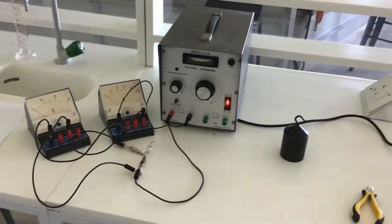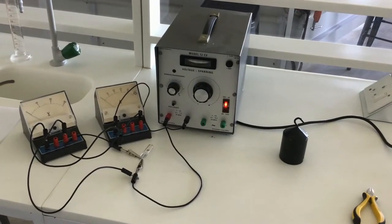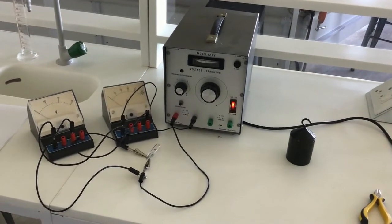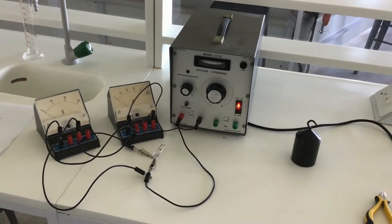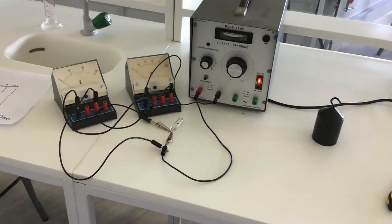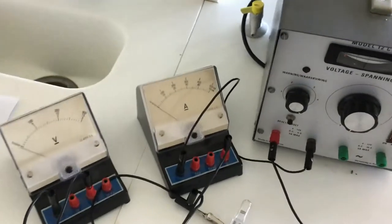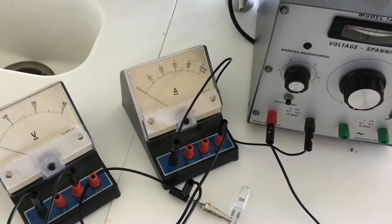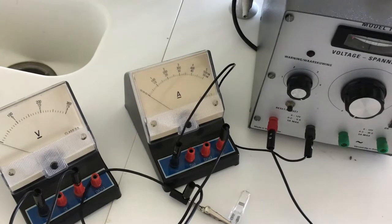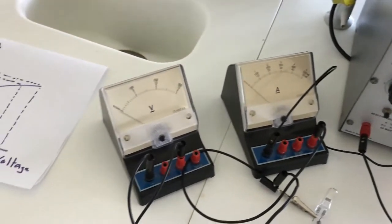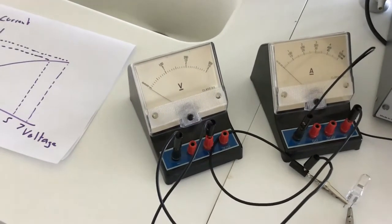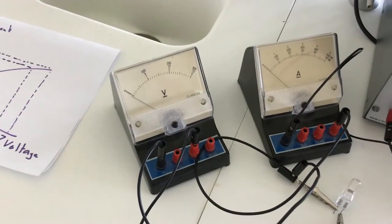Now what I've got is my power supply here, and the power supply has also got a variable resistor inside it, so I'm going to vary the current and the voltage across the bulb here. I've also got in series with the bulb an ammeter here to measure the current, and I've also set up a voltmeter here so we can measure the voltage as well.